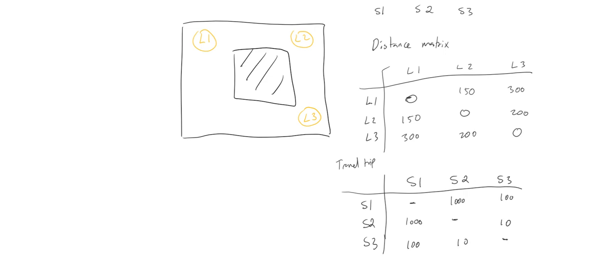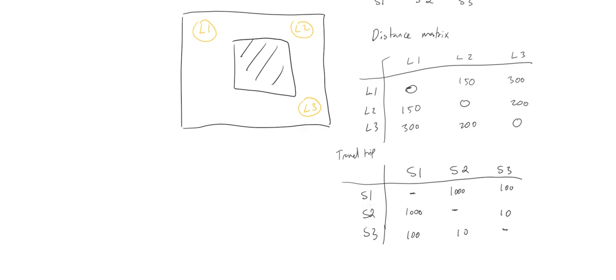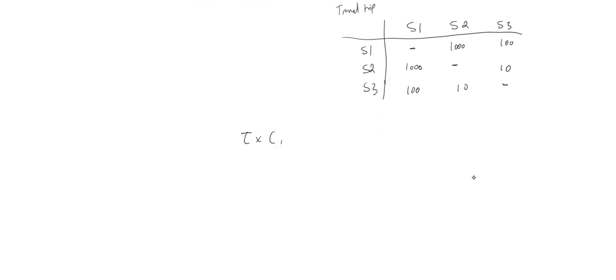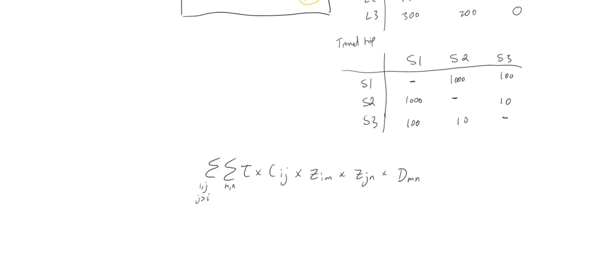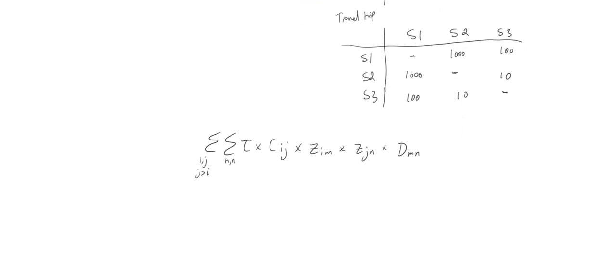What we're trying to compute is the travel cost between pairwise supply points. The formula is: the sum over all i, j and m, n of C_ij multiplied by Z_im multiplied by Z_jn multiplied by D_mn, multiplied by tau. Given that we have triangular matrices, we're only interested in one-way direction flow, which is why j is greater than i. The notation: i and j correspond to facilities, and m and n correspond to locations.